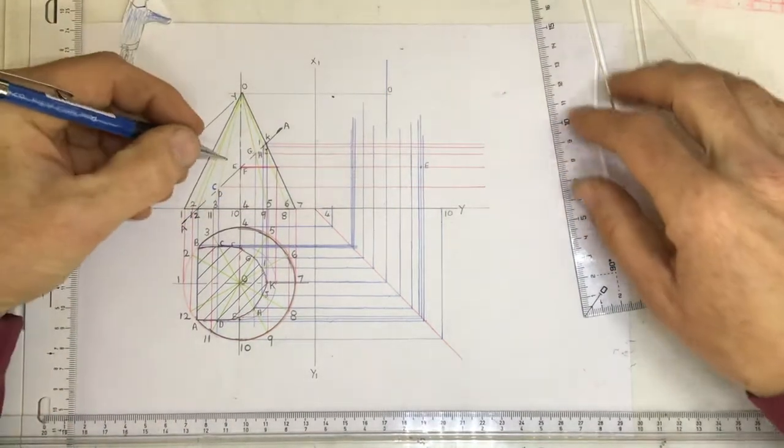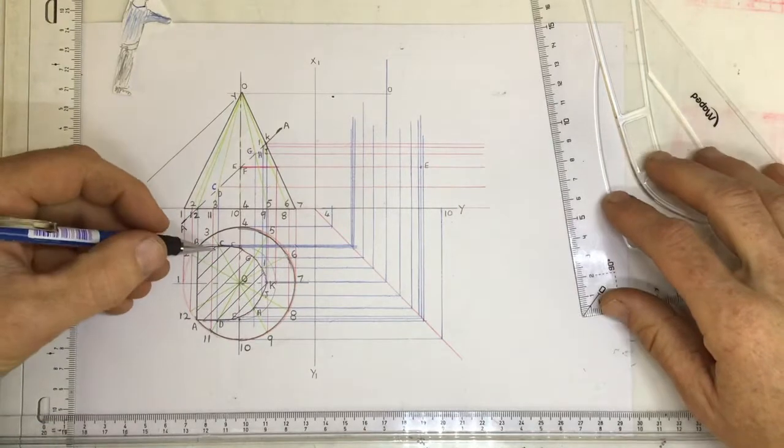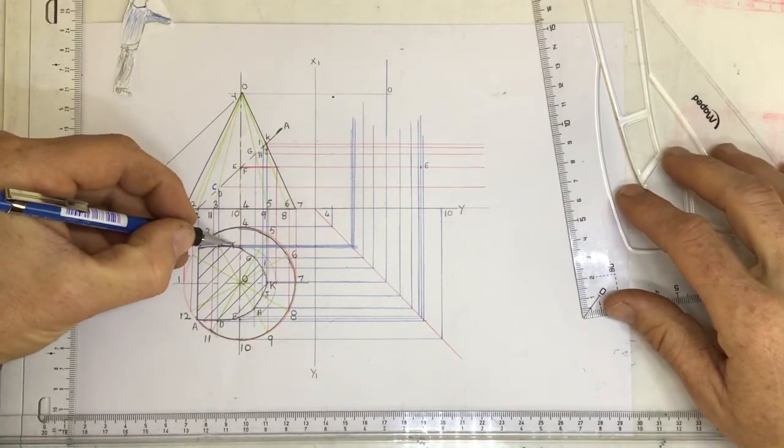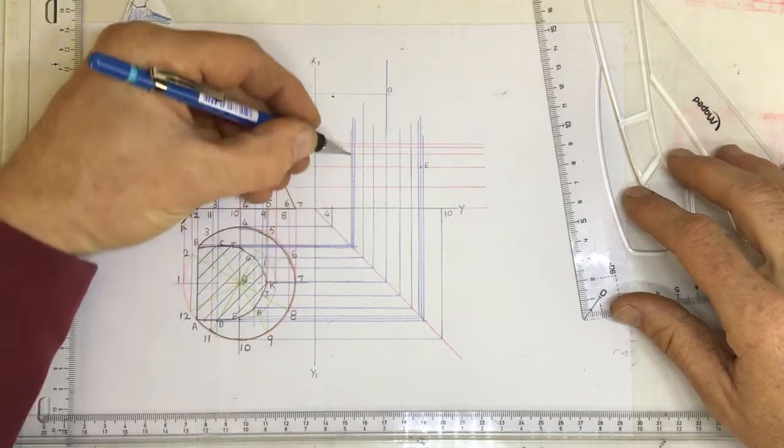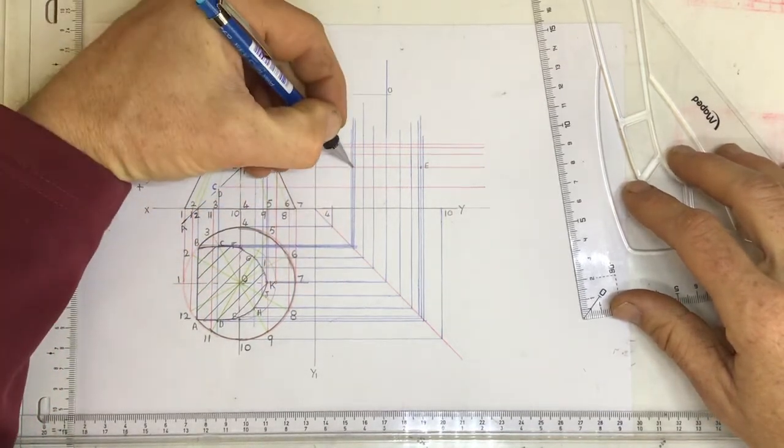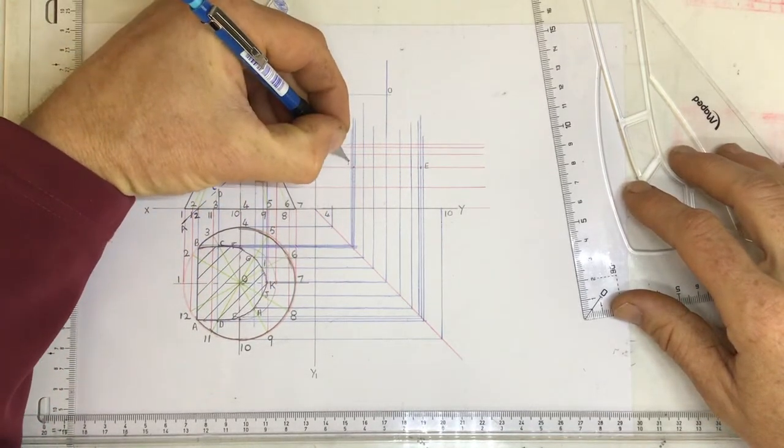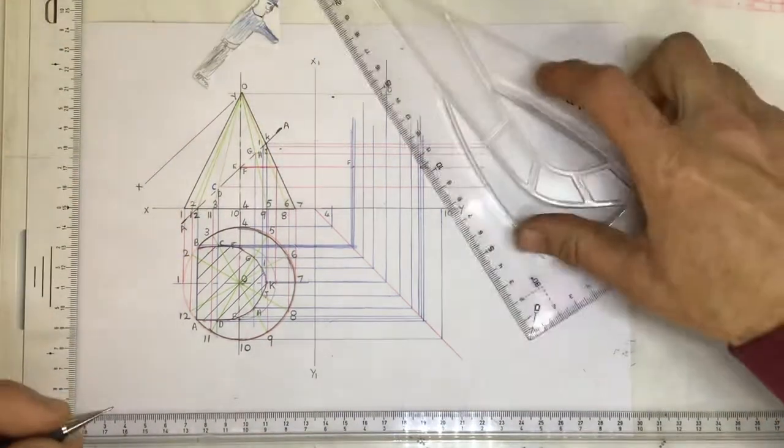Okay, and I'm going to do the same thing for F. There is point F over there. Take that across, take that up over there. There's F over there, and I can label that F.